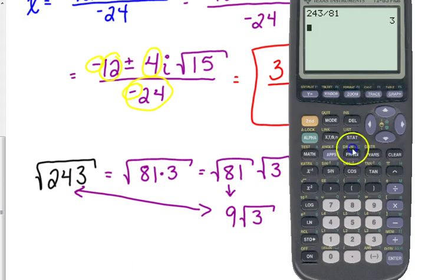So, 243 is equivalent to 9 times the square root of 3. And you can check that by looking at their decimal values. The square root of 243, and 9 times the square root of 3, they give you the exact same decimal value.